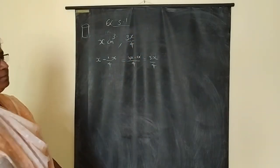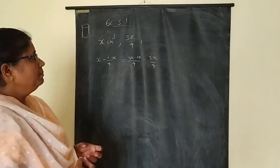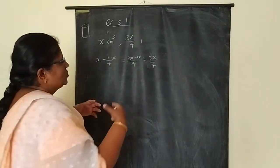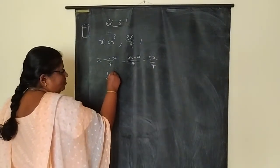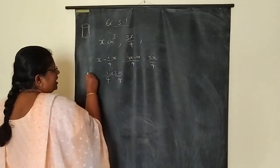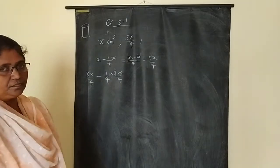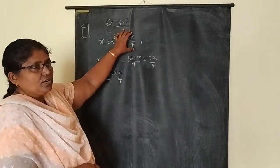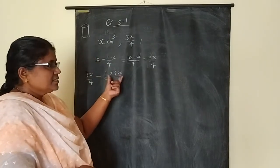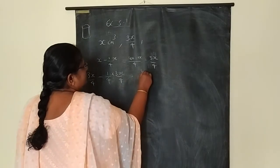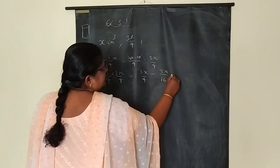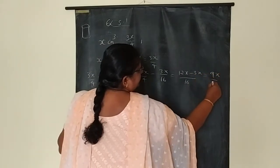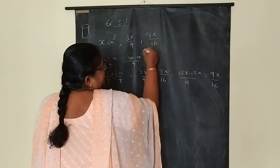From 3x/4, again one-fourth is removed: 3x/4 minus (1/4)(3x/4) = 3x/4 minus 3x/16. With LCM 16, we get 12x minus 3x = 9x/16. Then from 9x/16, removing one-fourth gives 9x/16 minus (1/4)(9x/16) = 36x/64 minus 9x/64 = 27x/64.